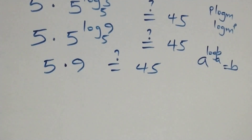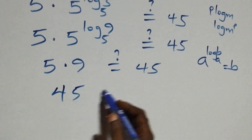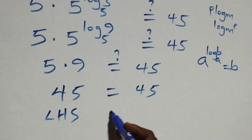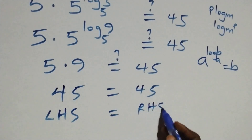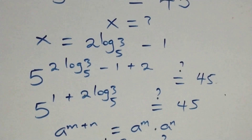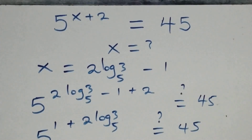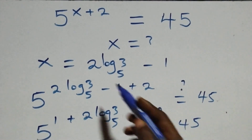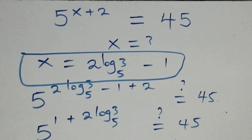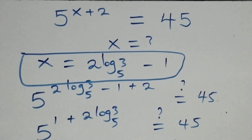Indeed, 5 times 9 equals 45, which equals 45 on the right hand side. Therefore the left hand side equals the right hand side, and we conclude that x equals 2 log base 5 of 3 minus 1 satisfies the given problem. Thank you for watching — don't forget to subscribe for more videos, turn the notification bell on, share this video, give it a thumbs up, post your comments, and join our membership package. See you next class, bye for now.